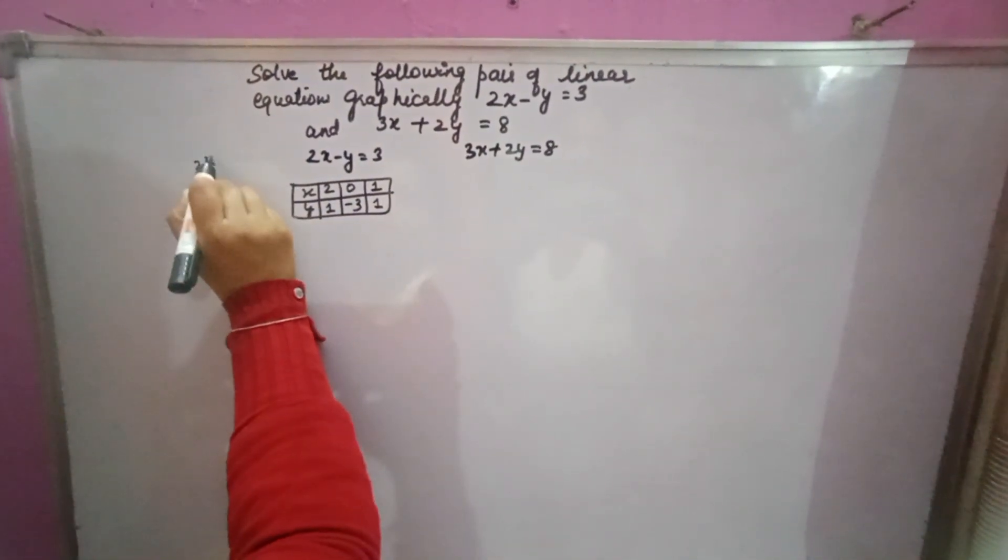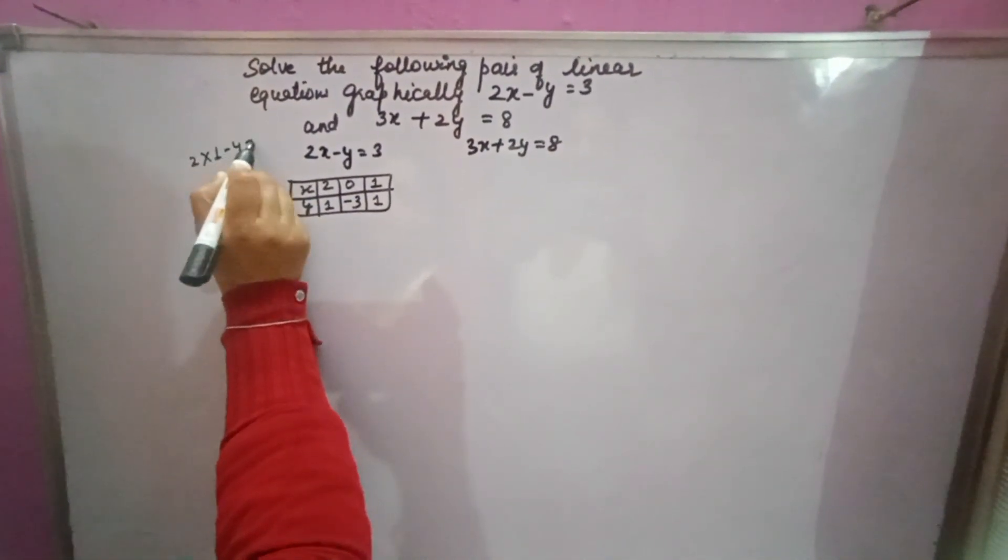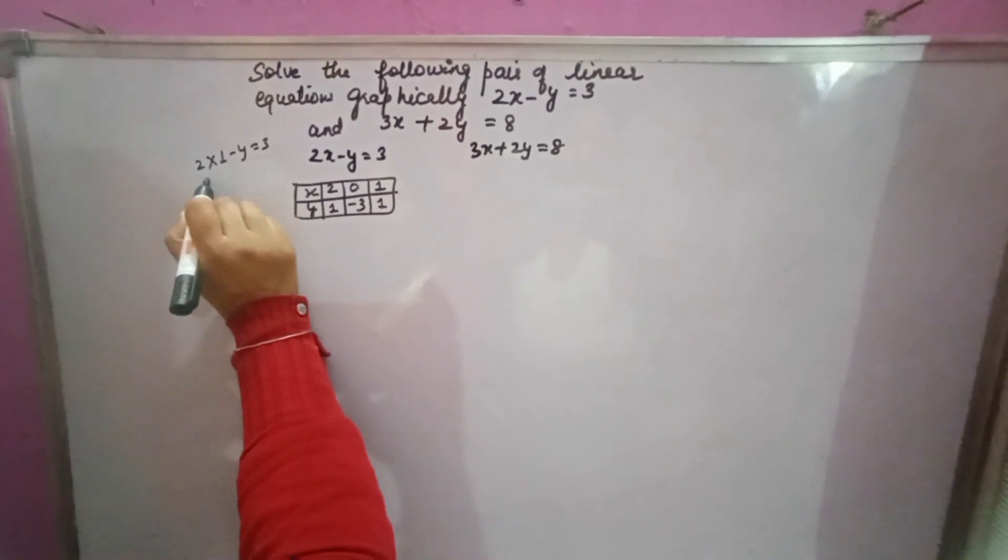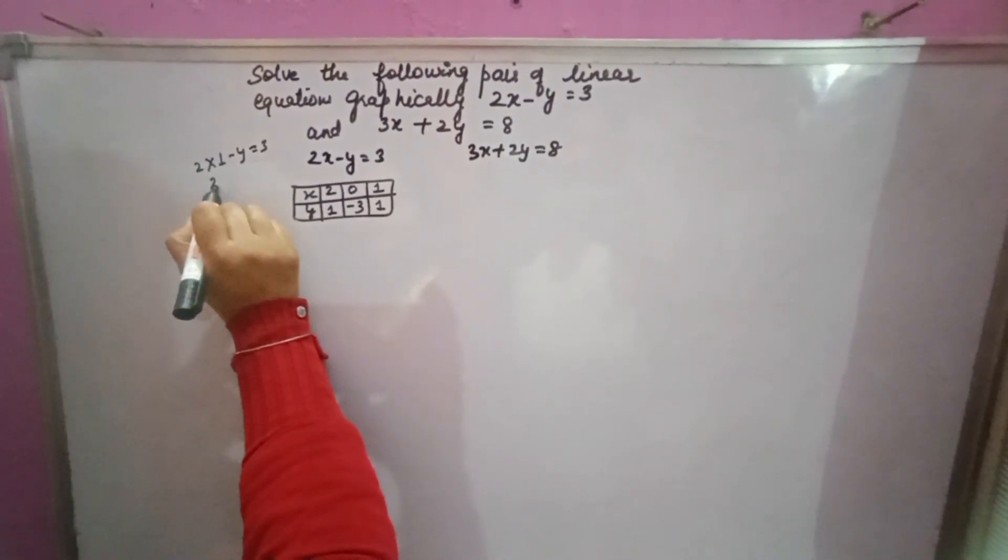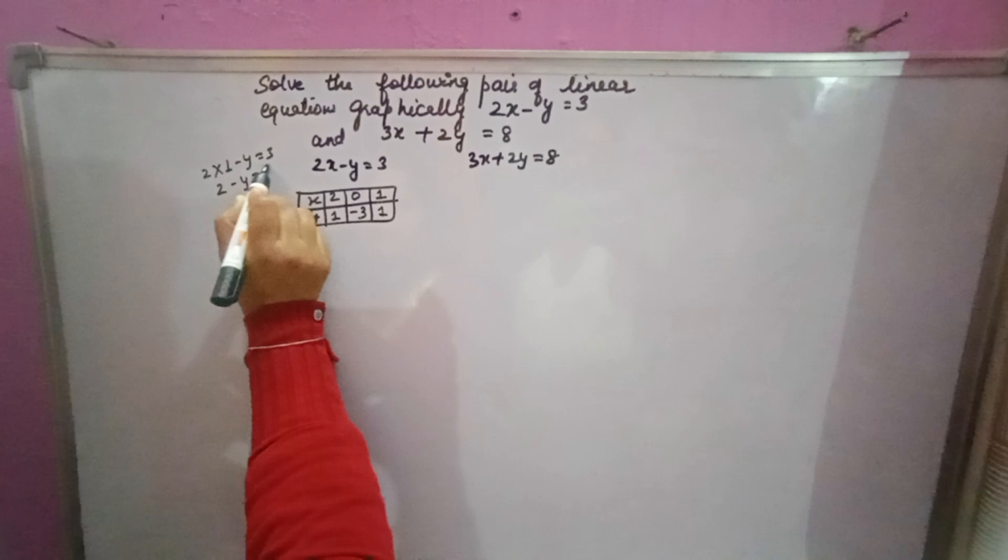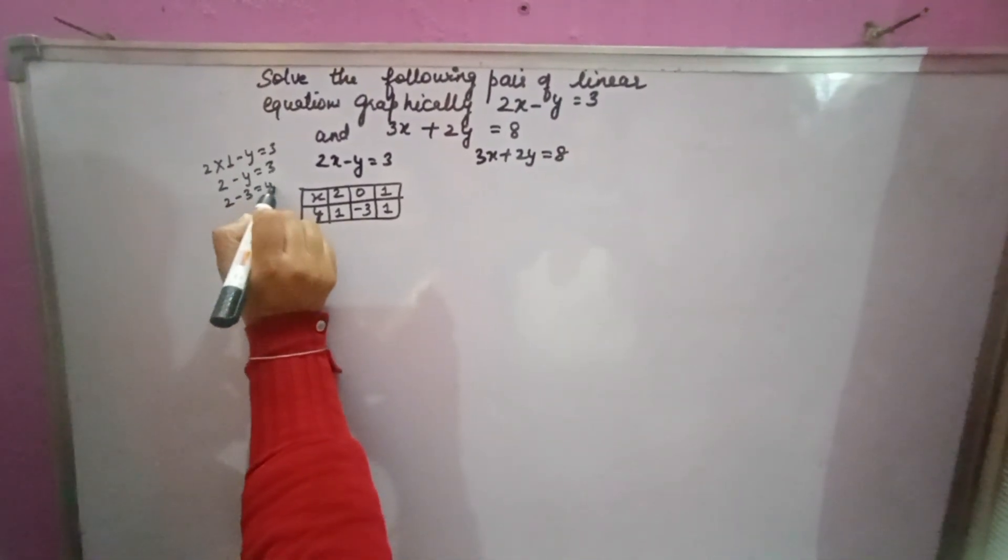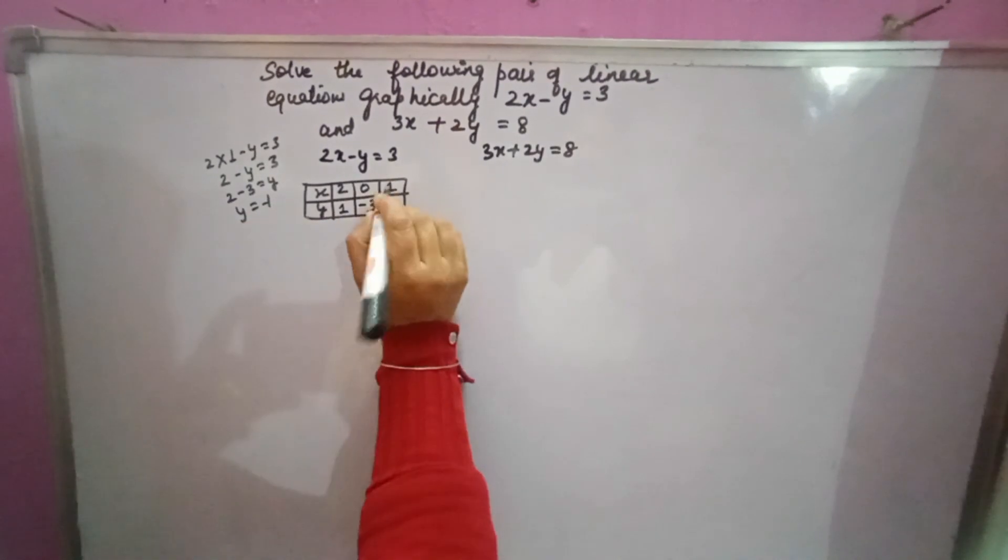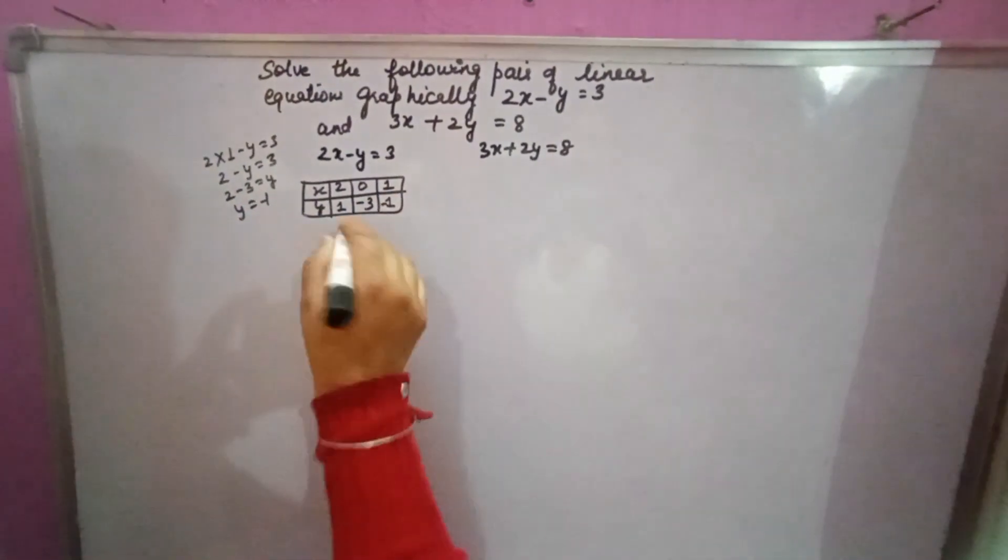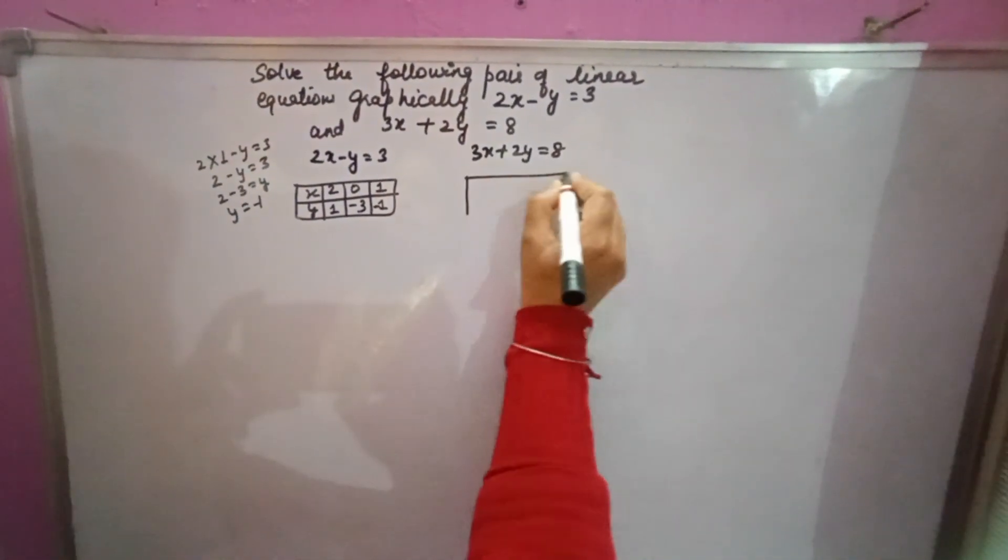x is 1. See, 2 times 1 minus y equals 3. If you don't understand, let us solve it. 2 times 1 is 2. Minus y equals 3. Minus y will go to that side. It will become y. y will come minus 1. y value will come minus 1. So these are the 3 values. 3 values are enough.